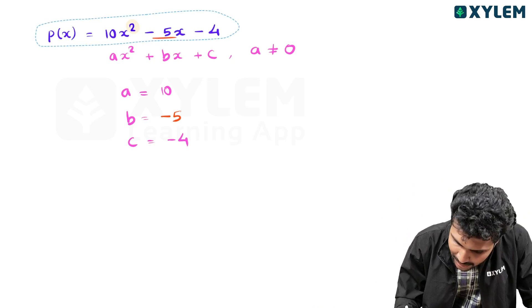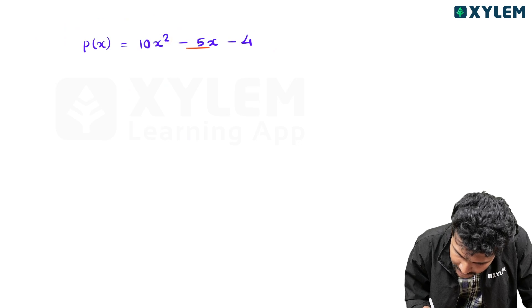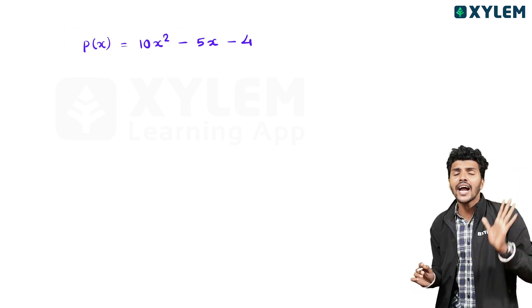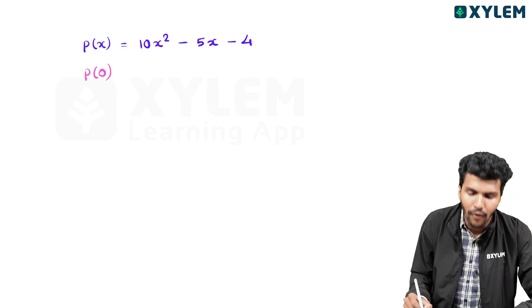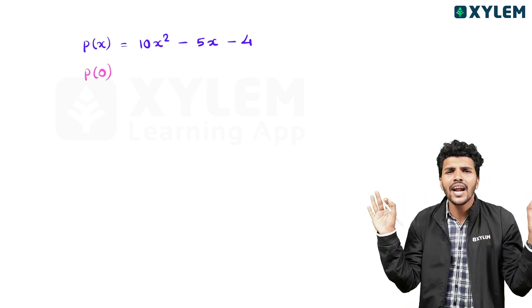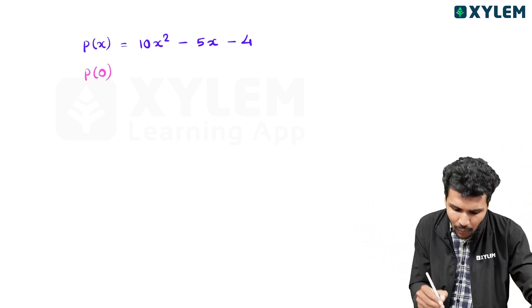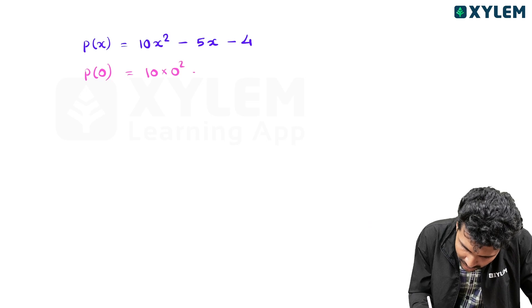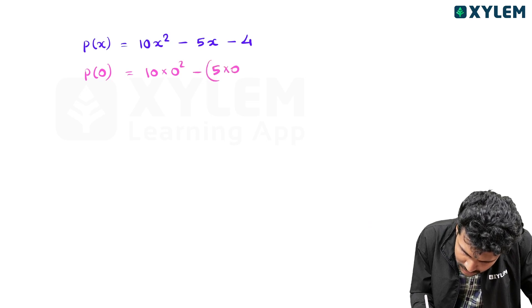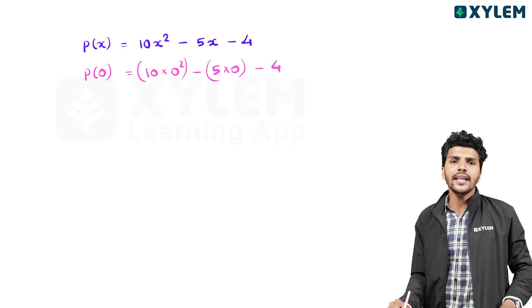I am going to show you the same thing. P of x is the same thing. P of zero — the value of x is zero. What is the value? The input is zero: one minus five plus two, and it is equal to zero.